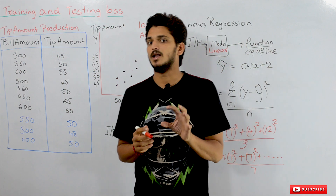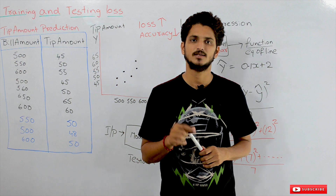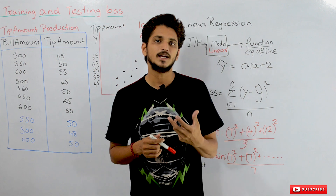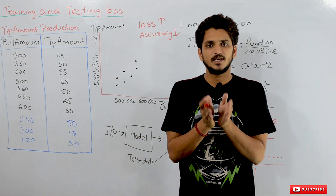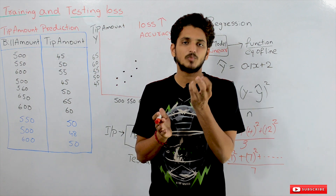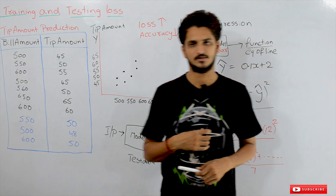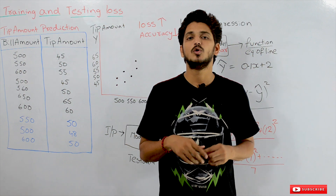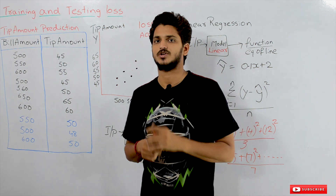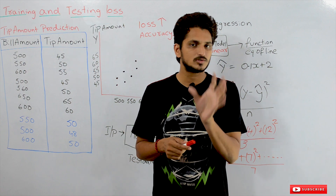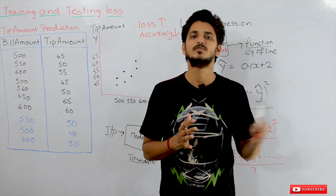Let's take an example and understand what training loss and testing loss is. In our first 10 classes we already discussed our first basic machine learning model — linear regression. We will take that model as an example. Our assumption here is that you have already watched those 10 videos and are good at understanding linear regression. If you haven't watched those videos, please watch them and come back here. For better understanding, please follow from the beginning of the classes.